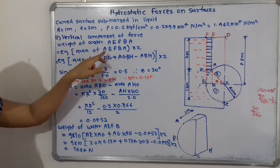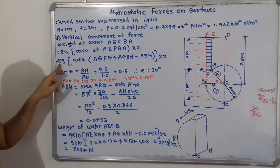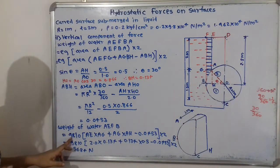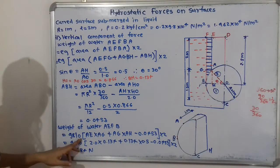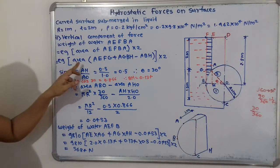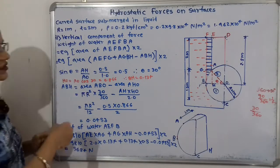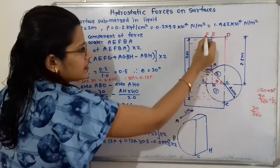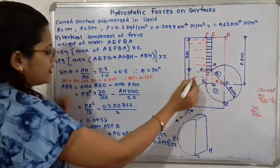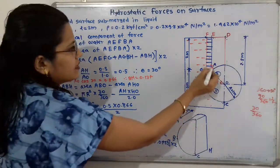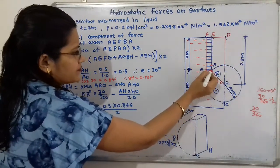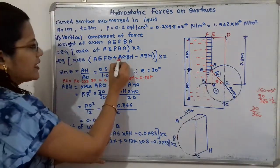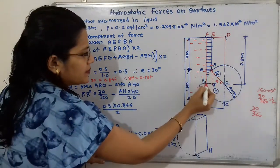Now calculating the weight of water in area AEFB: rho × g = 1000 × 9.81 = 9,810. We place outside the bracket the common length of 2 meters. With AE = 2, AG = 0.134, and area ABH = 0.0453, the weight of water in AEFB equals 5,684 Newton.